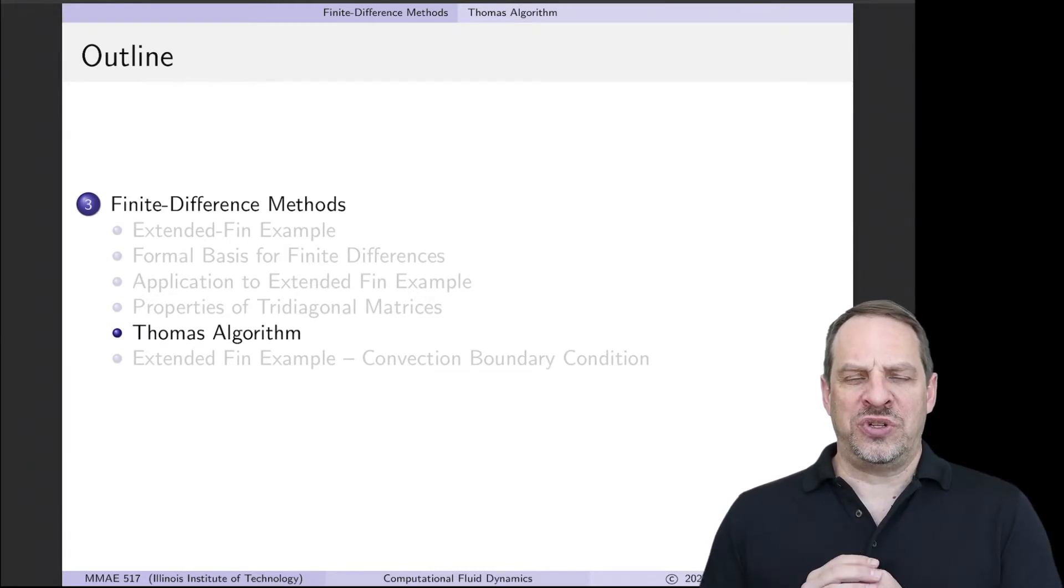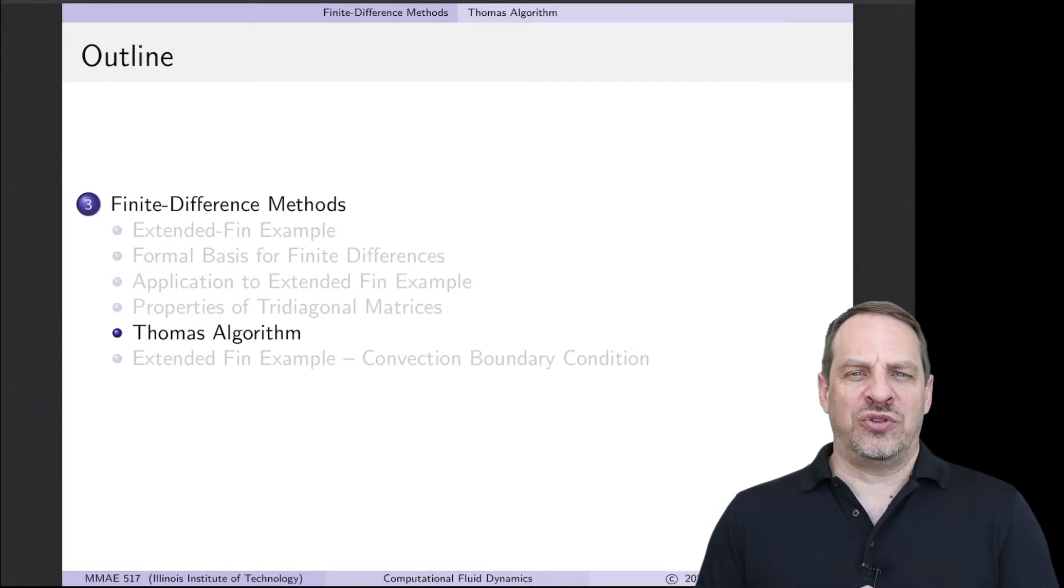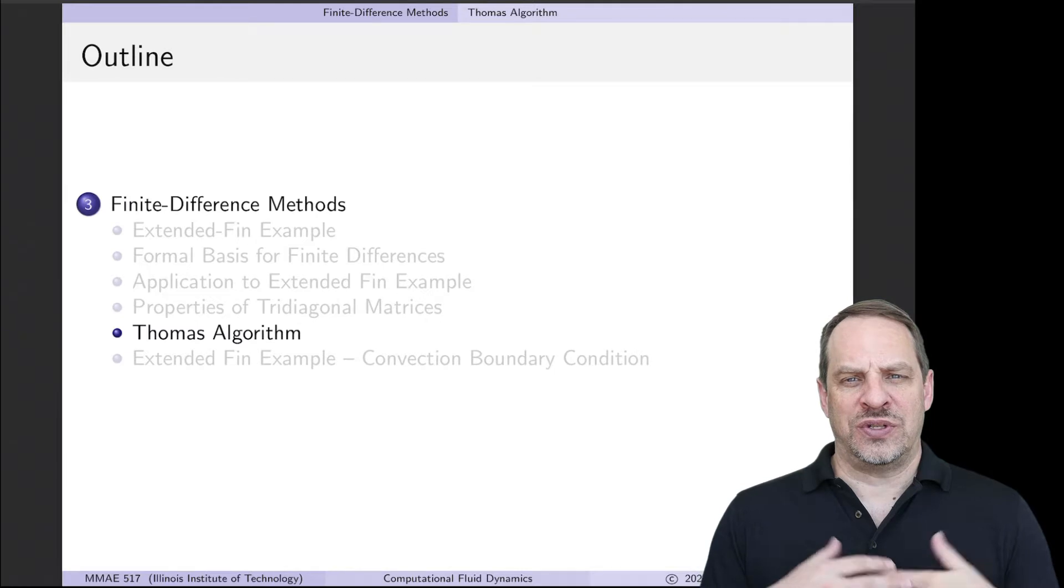In the previous video, we talked about some properties of those tridiagonal systems. In particular, we looked at how well or ill-conditioned they might be based on the values of the coefficients in the tridiagonal matrix. And here we're going to look at how we actually solve this using what's known as the Thomas algorithm.